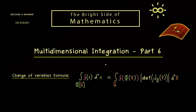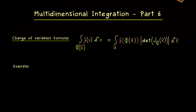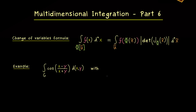I can immediately show how this works in practice with an example. The best application is a two-dimensional example: it's still complicated enough, but we can sketch it. We have an integral with two variables, with the cosine function evaluated at (x minus y) divided by (x plus y), integrated over the domain g. Note that we're already on the right-hand side of the formula, since we can see the phi function inside the cosine.